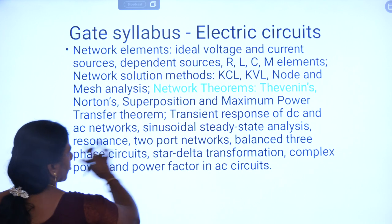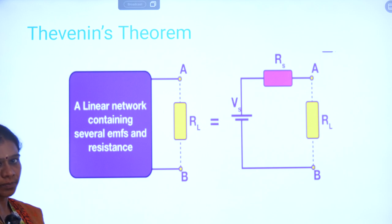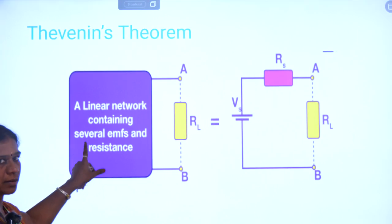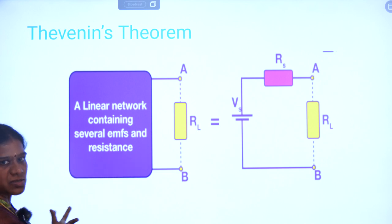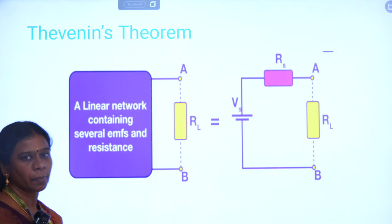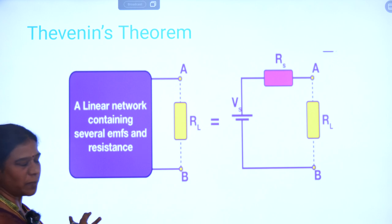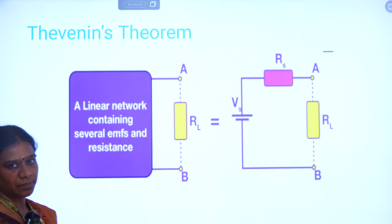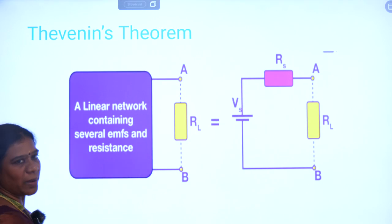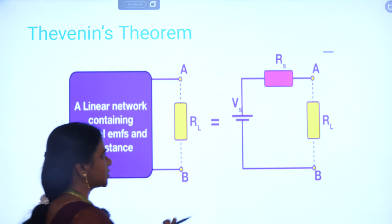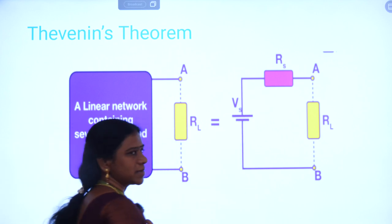Now we are going to talk about Thevenin's theorem in detail. Here we have a linear bilateral network — this network may be large in size, it may consist of many values of resistance, inductance, capacitance, current sources, and voltage sources. If you want to find the current passing through the load resistance RL, this portion can be completely replaced by a simple network.